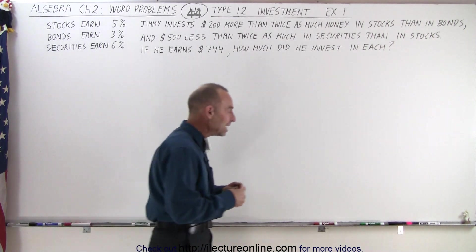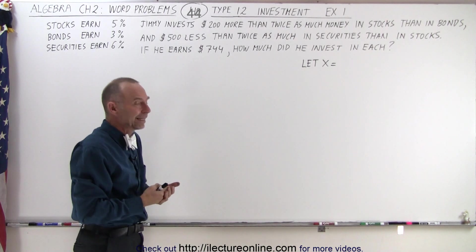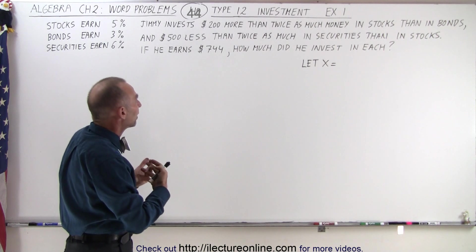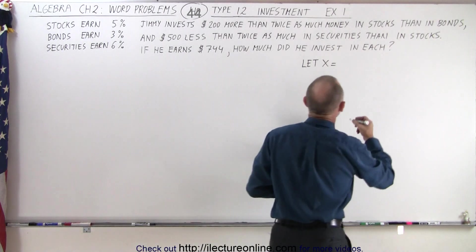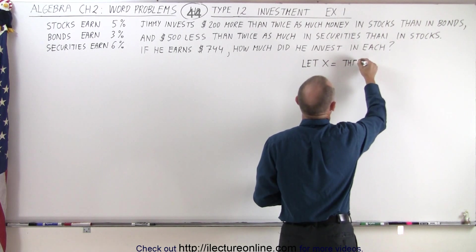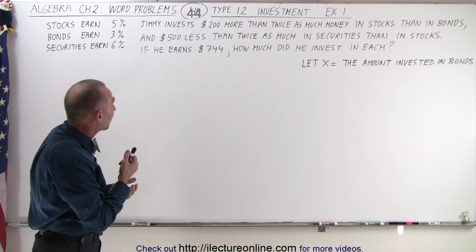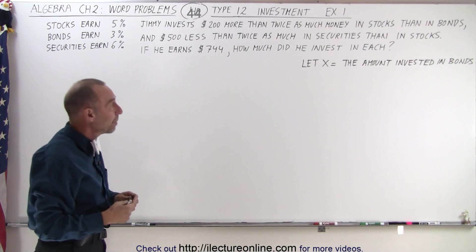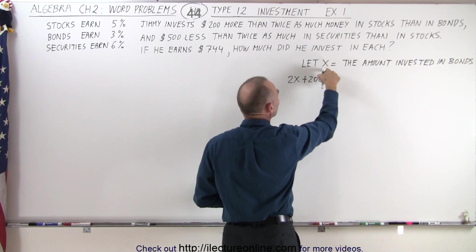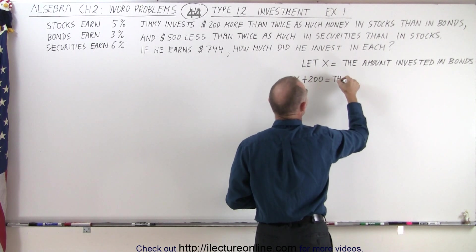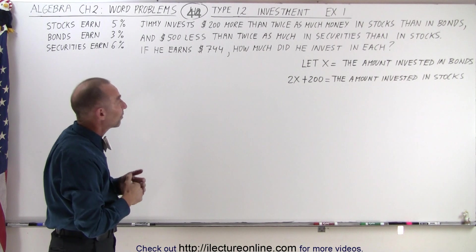We're going to start with let x equal something. In this case, we want to let x equal the amount invested where he invests the least amount. It looks like bonds is where he invests the least amount. So we let x equal the number of dollars invested in bonds. Now, the amount invested in stocks is two hundred dollars more than twice as much as in bonds — that's 2x plus 200.